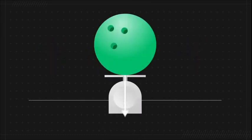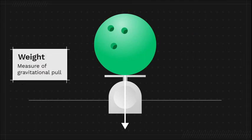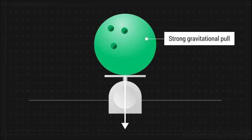We can measure this pull with a scale. A scale tells us an object's weight, or a measure of the Earth's gravitational pull. Since the bowling ball experiences the strongest gravitational pull, we can also say that it weighs the most.